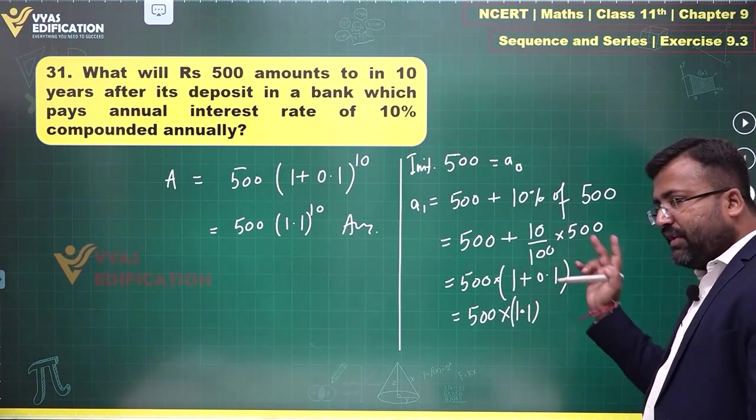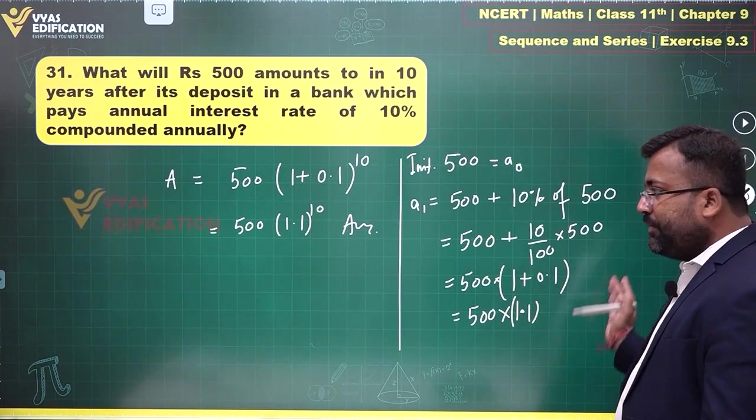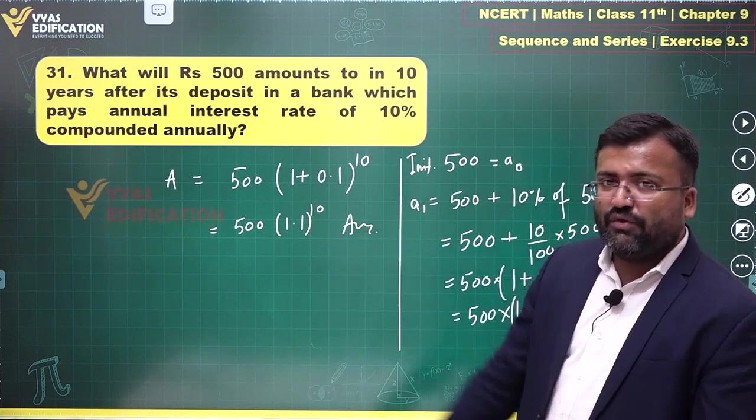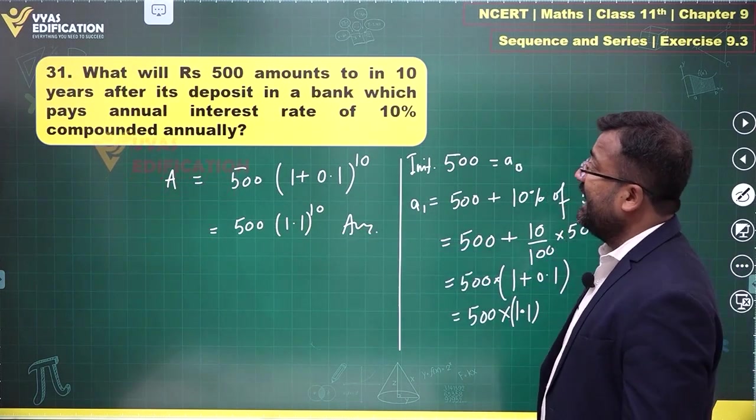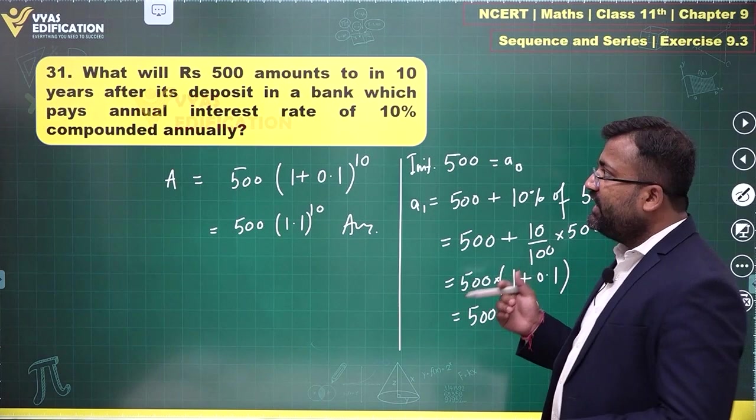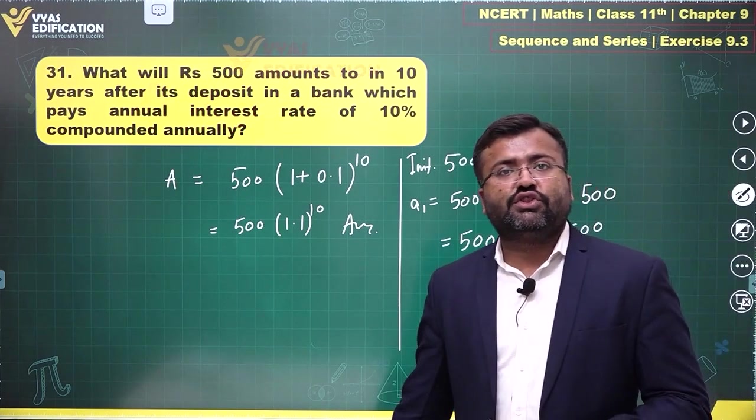At the end of two years, this 1.1 will be squared. At the end of three years, 1.1 will be cubed. At the end of 10 years, 1.1 raised to 10 is what you will get. That's question number 31 for us, and that's a complete explanation of this question.